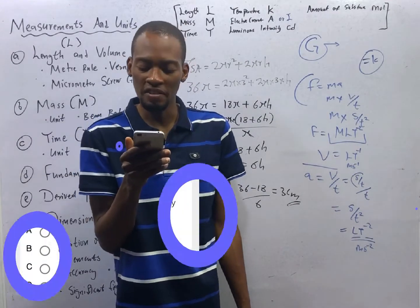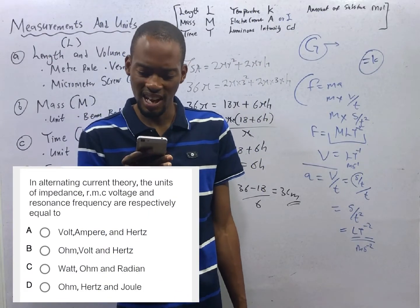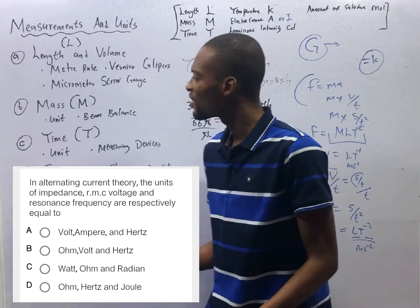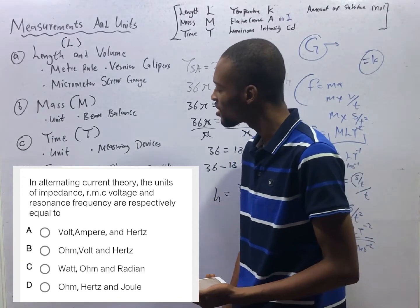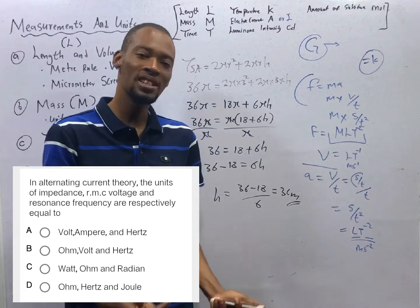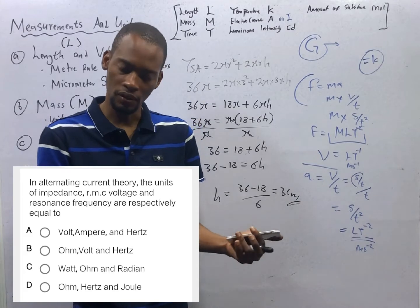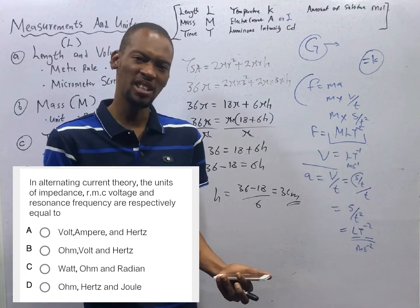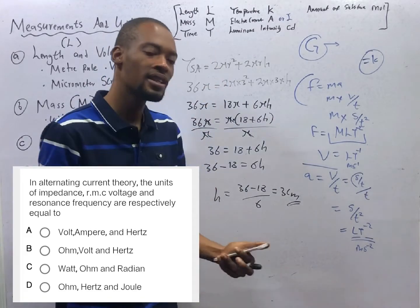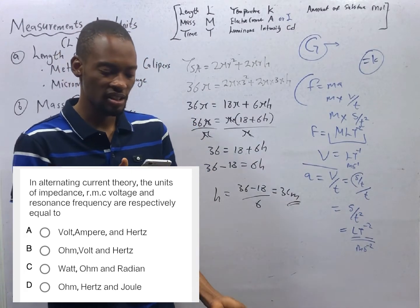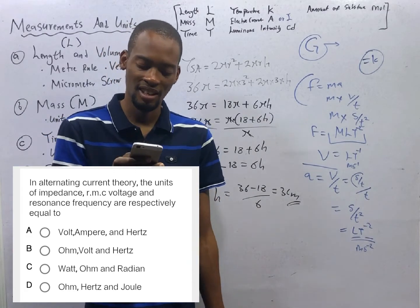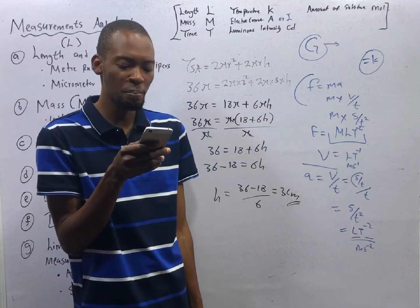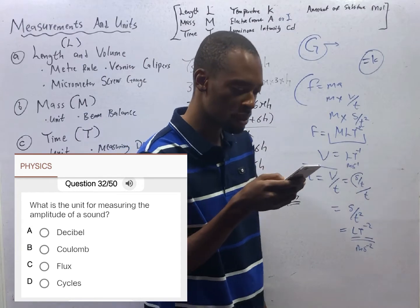In alternating current theory, the units of impedance, voltage and resonant frequency are dashed. Impedance is opposition to flow of current offered by resistors, capacitors and inductors. In your DC circuit, you deal with only resistors as opposition to the flow of current. By the time you advance to AC circuits, you will see resistors, inductors and capacitors. They are all offering opposition to the flow of current. In that case, we refer to them as reactants. So the opposition by capacitors and inductors is reactance. When resistor, capacitor and inductor merge to offer opposition, that total opposition is referred to as impedance. So it is measured in ohms, just like resistance. Voltage is measured in volts and frequency is measured in hertz, making option B the correct option.